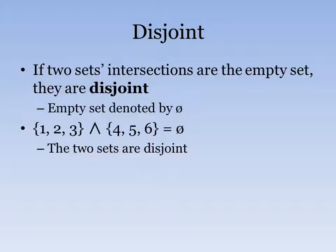We have also something called a disjoint. So if two sets' intersections are the empty set, they are disjointed. So an empty set is noted by the symbol on the screen. So if we have a set that's 1, 2, 3, and then another set that's 4, 5, 6, we see that there is nothing in common here. So the result would be the empty set because they are disjoint.